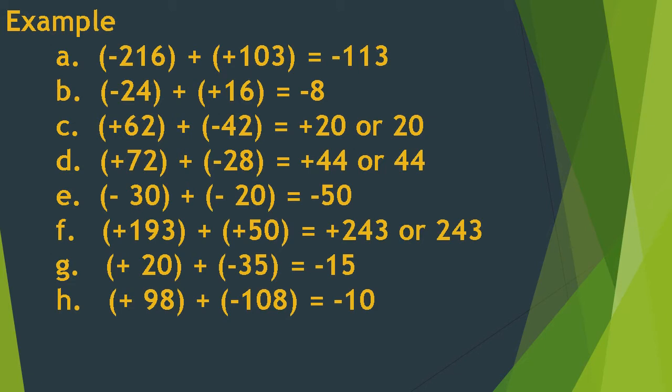Letter E: negative 30 plus negative 20 is equal to negative 50. Since both have the same sign, we add 30 and 20 to get 50, then affix their common sign — negative — so the answer is negative 50.